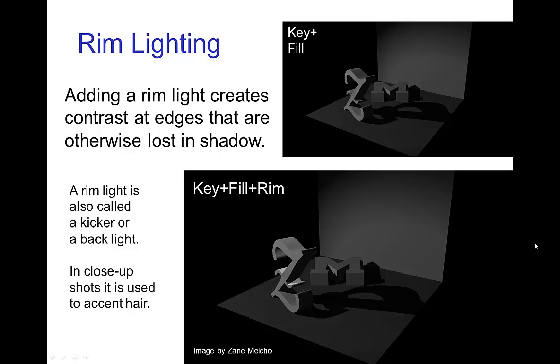Then finally three-point lighting is when we add a rim light to accentuate edges which would be otherwise lost in the shadows. So we see that nicely mostly around the Z, the middle of the Z here is picked up by the rim light. This is sometimes called the kicker or back light and in close ups it's often used to accentuate the hair.